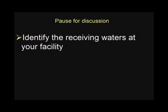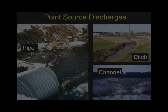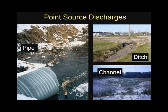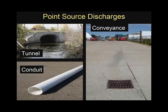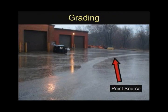Identify the receiving waters at your facility. A point source is any discernible, confined, or discrete conveyance that discharges stormwater into surface waters. Examples of point source discharges include, but are not limited to, pipes, ditches, channels, tunnels, conduits, or anything that conveys stormwater into surface waters. In most cases, land graded to convey stormwater runoff across a piece of property would create a point source discharge of stormwater.